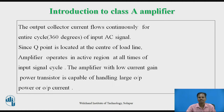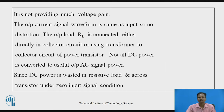The amplifier uses an amplifying device, that is a power transistor, with relatively low current gain. And the amplifier with a low current gain power transistor is capable of handling large output power or output current. The power amplifier is not providing much voltage gain. The output current signal waveform is the same as the input signal waveform. So the operation of the power transistor is mostly linear, so no distortion is caused in a class A power amplifier.